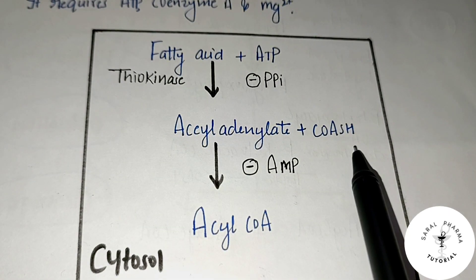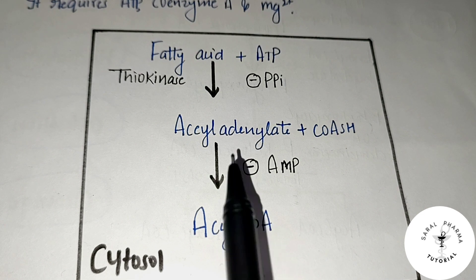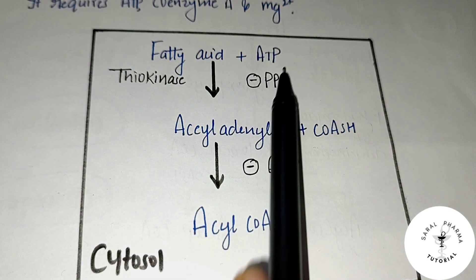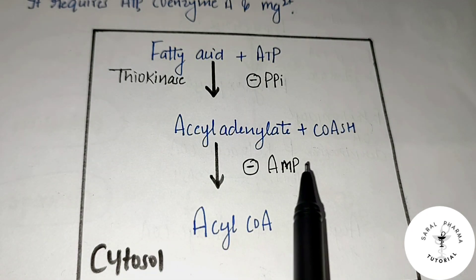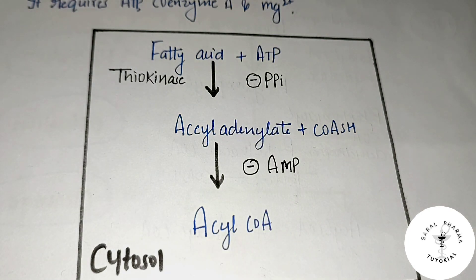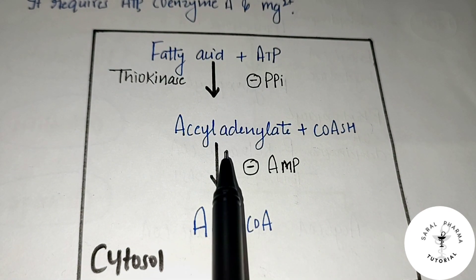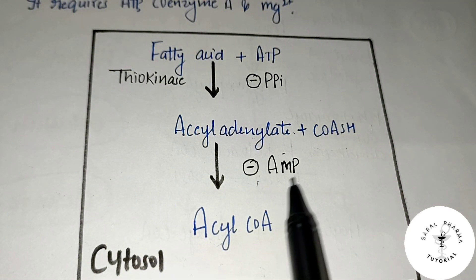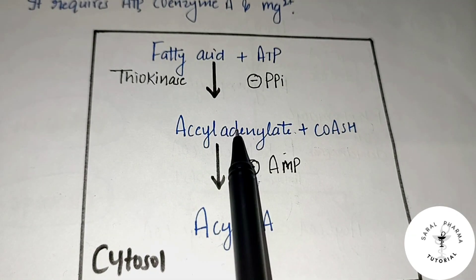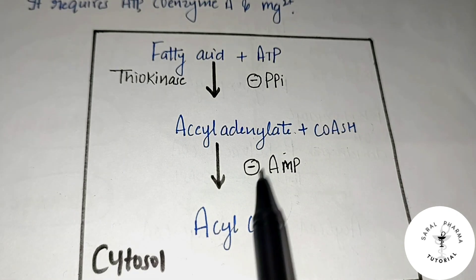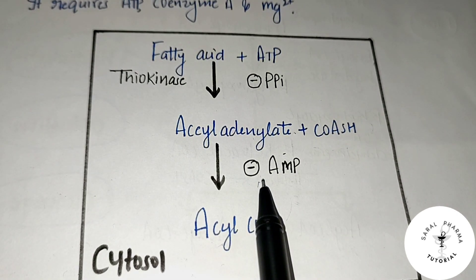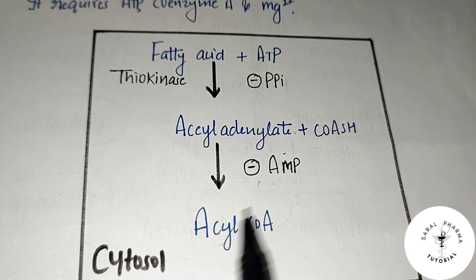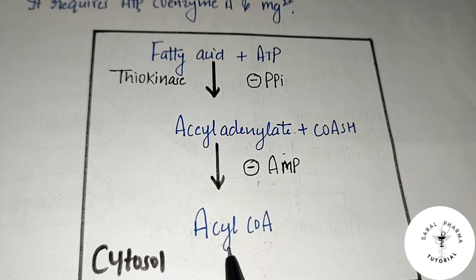Acyl adenylate plus Coenzyme A produces acyl CoA. Pyrophosphate is removed; ATP is triphosphate, ADP is diphosphate, and here we get AMP — adenylate. The product is acyl CoA (also called acyl coenzyme A), which is the activated form of fatty acid. This is the activated acyl coenzyme A.